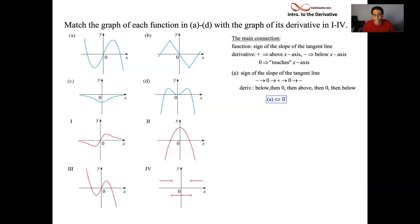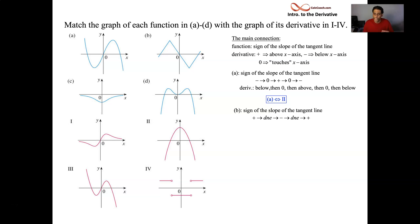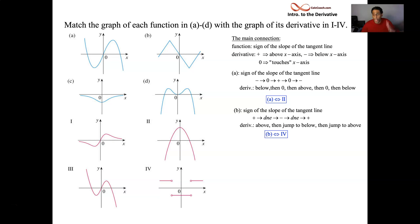Then we move to graph B. This function is a piecewise function made up of linear parts. The slope of the tangent line for a line is constant. You have a constant positive slope, then abruptly a sharp point, then abruptly a negative slope, then abruptly a positive slope again. I need places where my derivative doesn't exist at those sharp points. Only one of the derivative graphs has a non-existent derivative — that's Roman numeral four. It's positive, jumps to negative, then jumps to positive again.